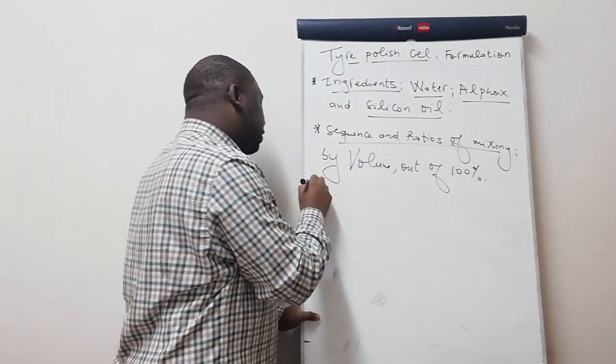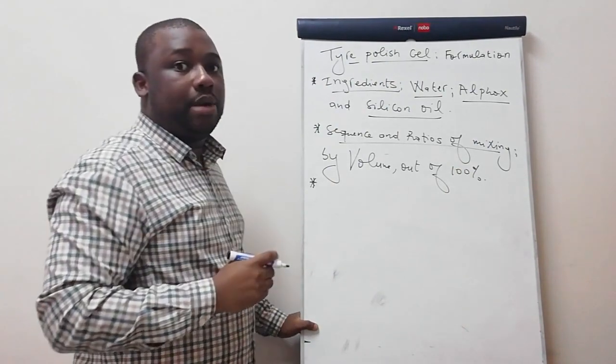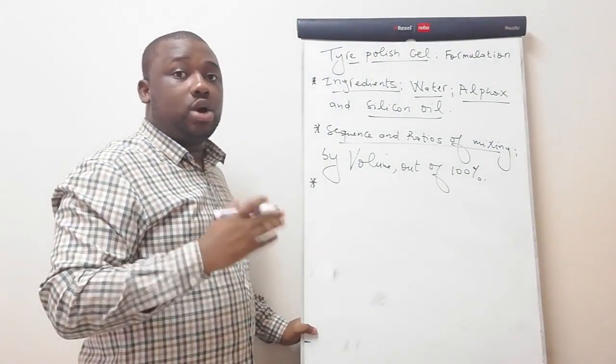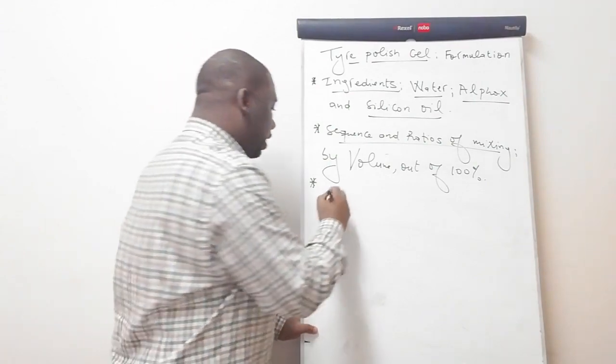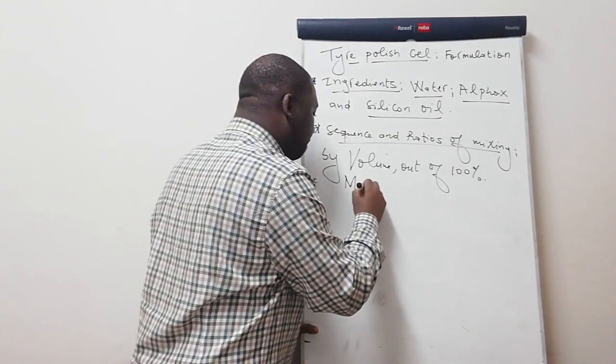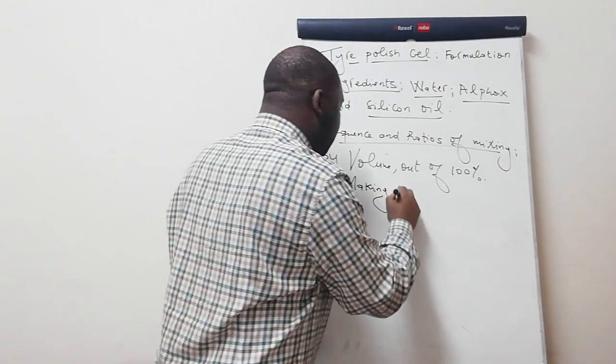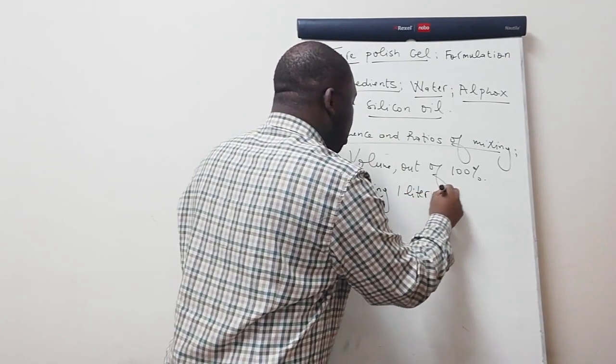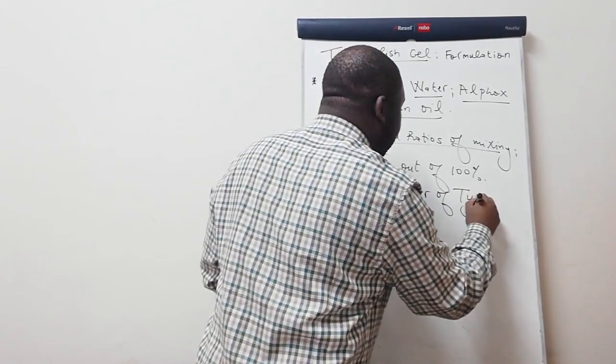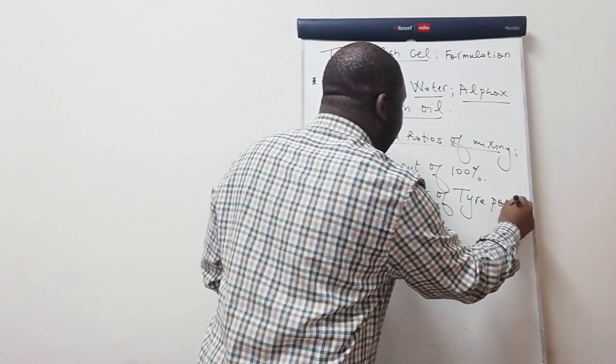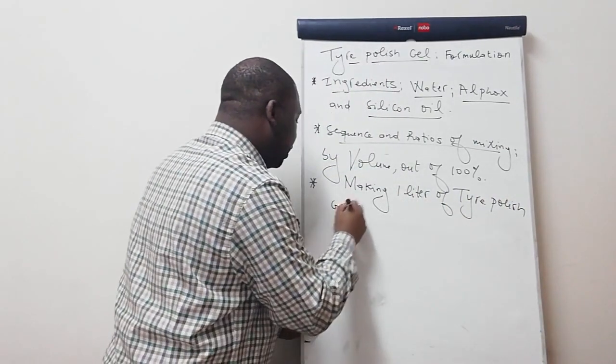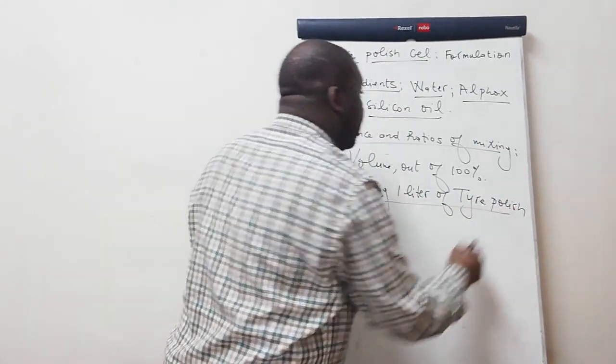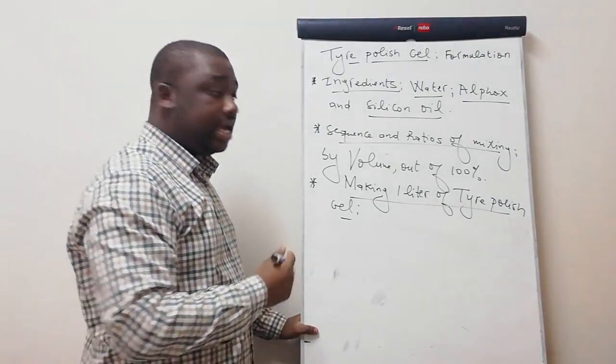Let us consider a case whereby we're manufacturing one liter of tire polish gel. Let's say making one liter of tire polish gel.